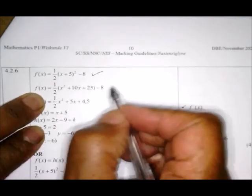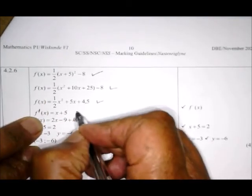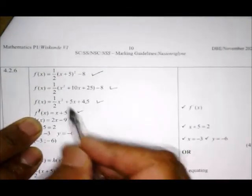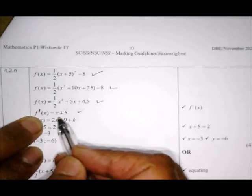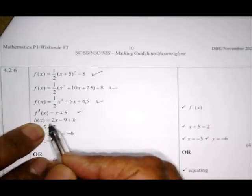Take the parabola equation f(x) = (x+5)² - 8, remove the brackets, simplify, and find the derivative. The derivative is the gradient. For h(x), which is a linear equation (the inverse plus k), the gradient is whatever is in front of x.